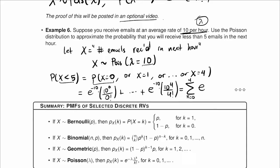It's basically the sum from x equal to 0 to 4 of e to the minus 10 times 10 to the x over x factorial.